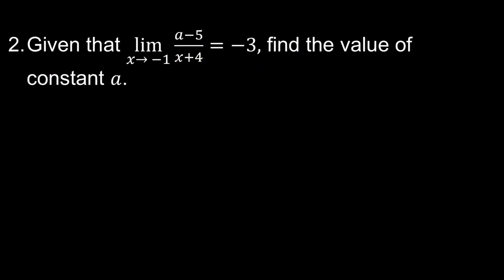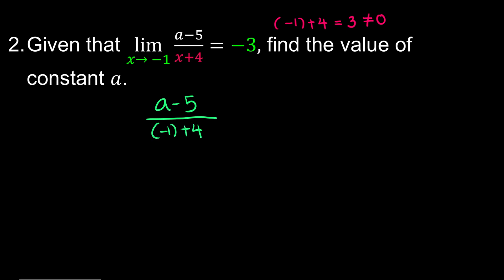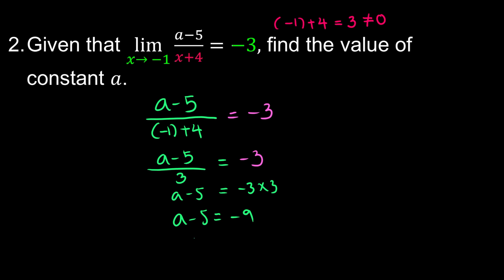Question 2: Given the limit of the equation when x approaches negative 1 is negative 3, find the value of constant a. First check the denominator: substituting x equals negative 1 gives negative 1 plus 4 equals 3, which is not 0, so we substitute directly. We get (a minus 5) over 3 equals negative 3, so a minus 5 equals negative 9, and therefore a equals negative 4.